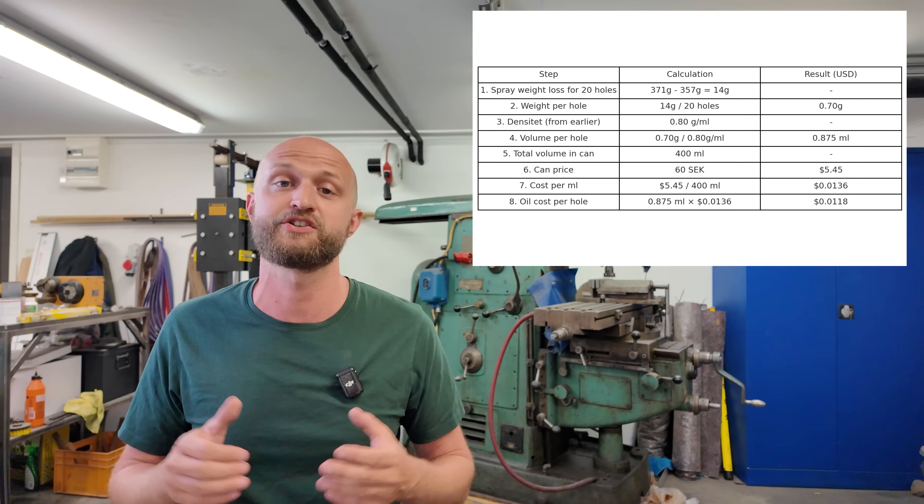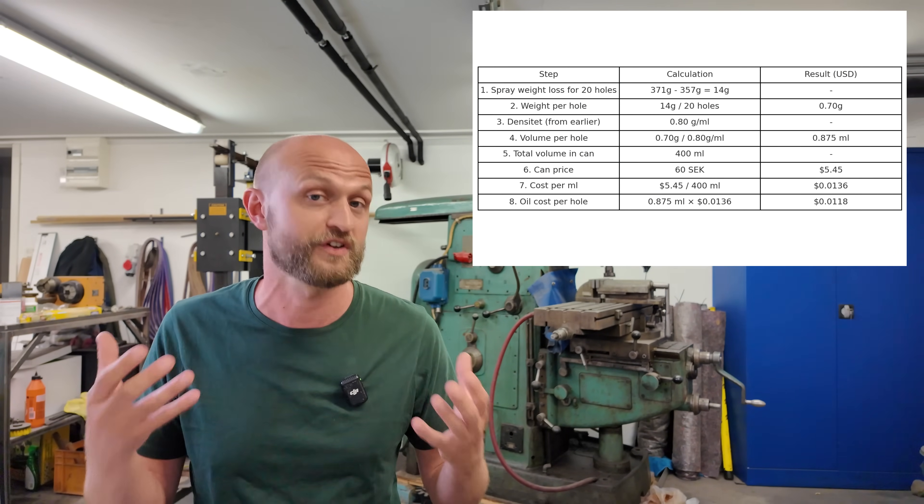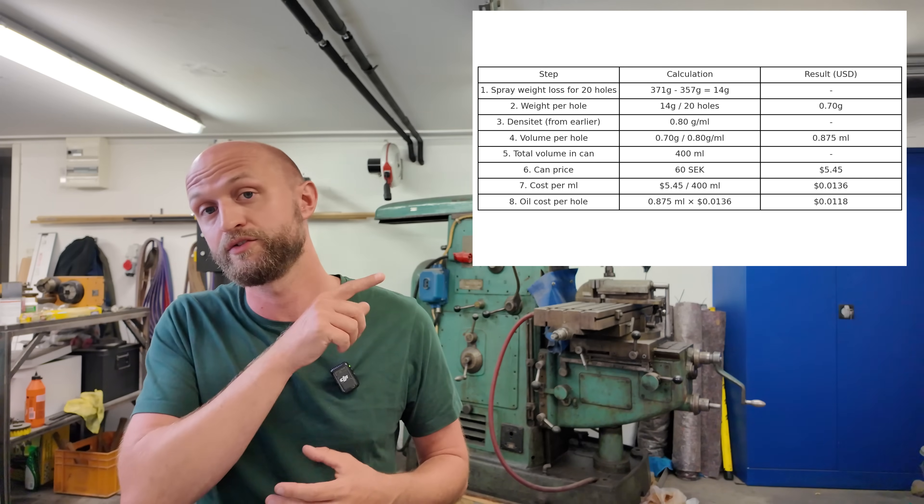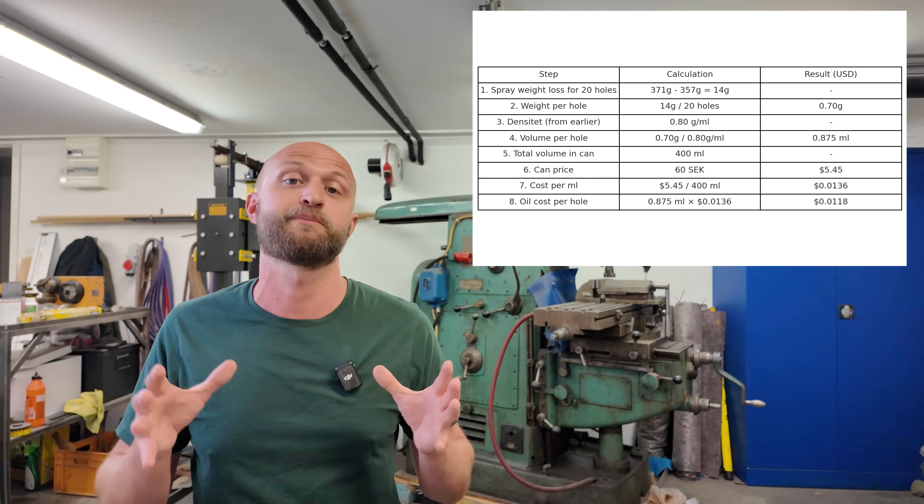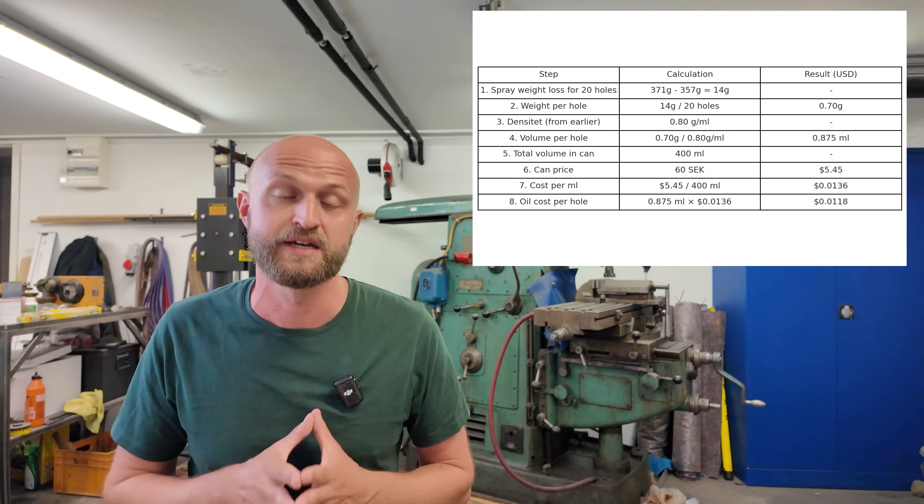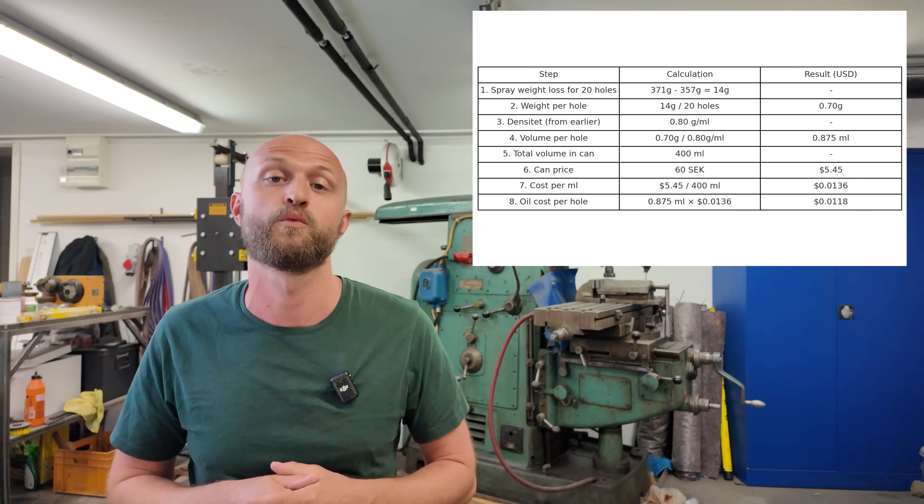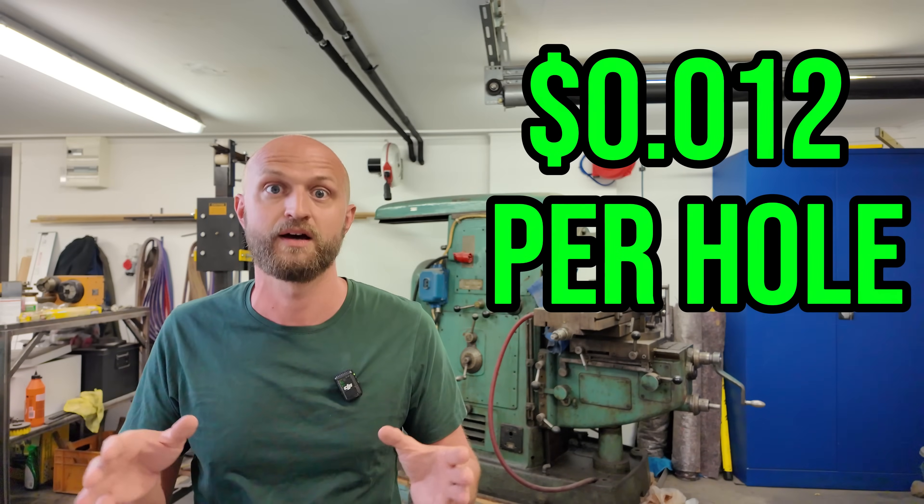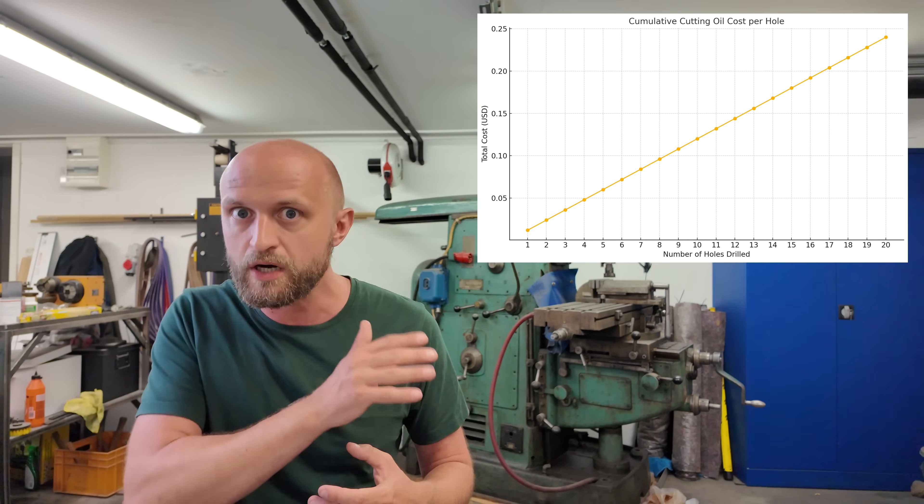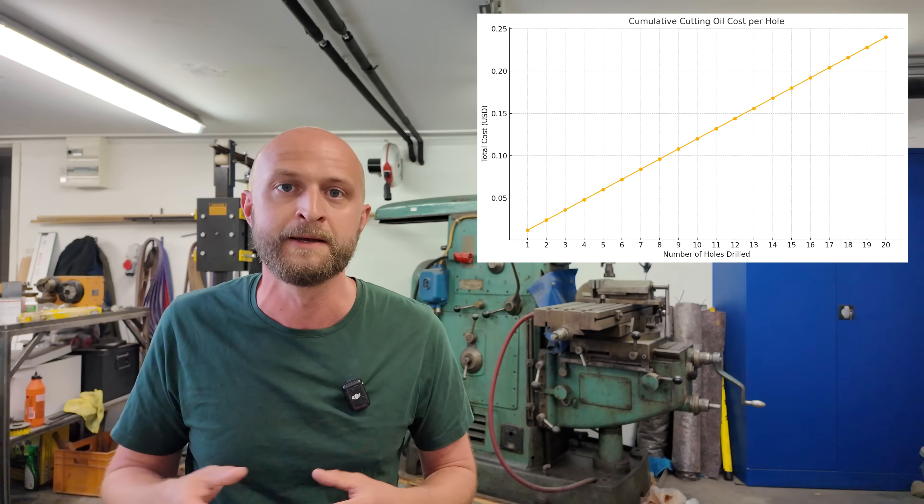I did a calculation just to know exactly which volume of cutting oil I used. You can see the chart here, but basically the total cost per hole was 1.2 cents. My mind is blown - I did not expect that. In my mind I was using much more oil than I actually did.